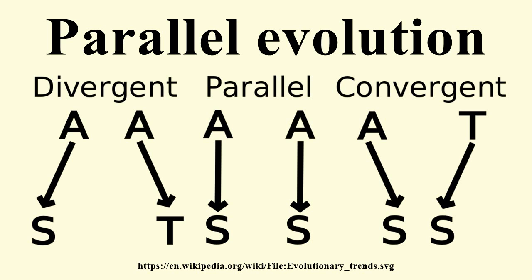Examples of these parallel forms include the litopterns and horses, whose legs are difficult to distinguish; the European saber-toothed cat and the South American marsupial saber-tooth; the Tasmanian wolf and the European wolf; and likewise marsupial and placental moles, flying squirrels, and mice.